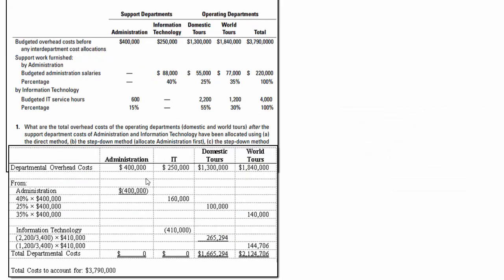Now the step-down approach is a little different. First, we list department overhead costs: $400,000, $250,000, $1,300,000, and $1,840,000 for the support and operating units. We consider administration first and allocate it proportionally based on the percentage of support furnished by administration. Using the budgeted figures of 88, 55, and 77, we calculate percentages: 40% goes to IT, 25% to domestic tours, and 35% to world tours.